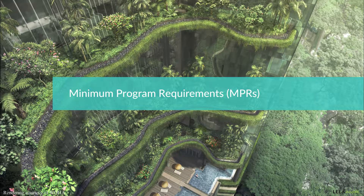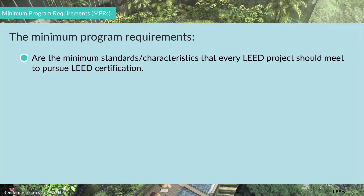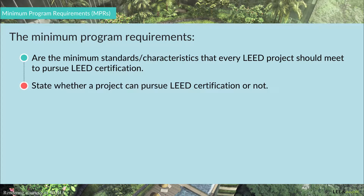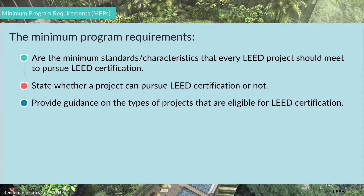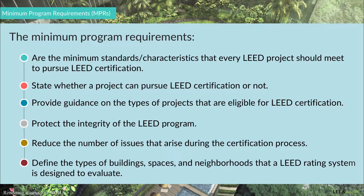The Minimum Program Requirements, or MPRs, are the minimum standards and characteristics that every LEED project should meet to pursue LEED certification. MPRs state if a project can pursue LEED certification or not. They provide guidance on the types of projects that are eligible for LEED certification, protect the integrity of the LEED program, and reduce the number of issues that arise during the certification process. They define the types of buildings, spaces, and neighborhoods that a LEED rating system is designed to evaluate.